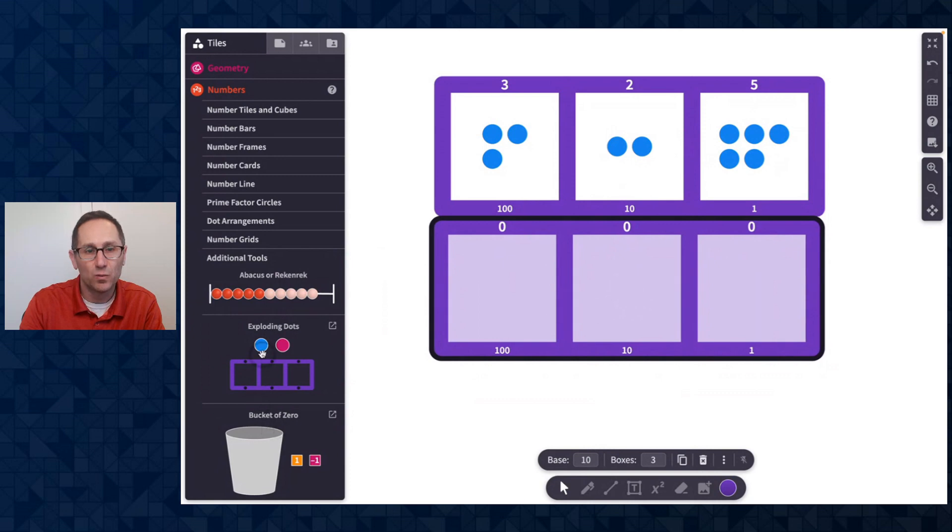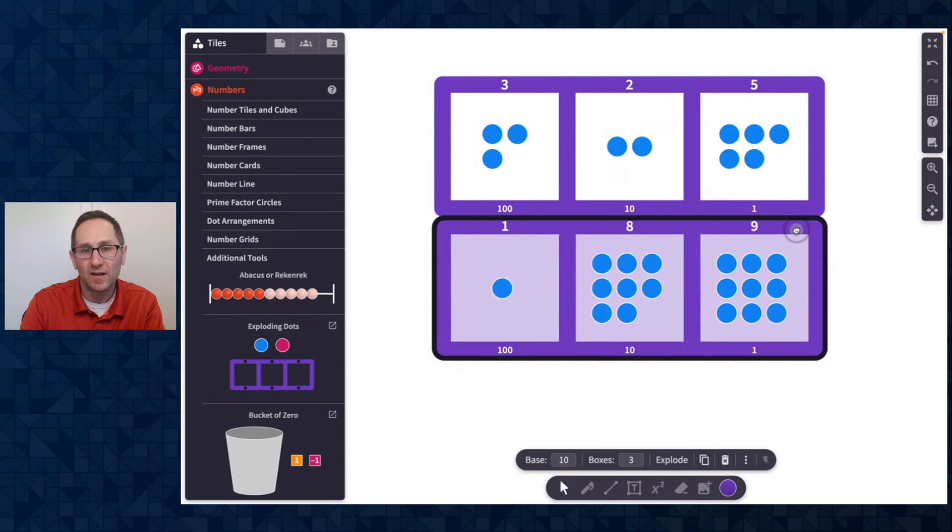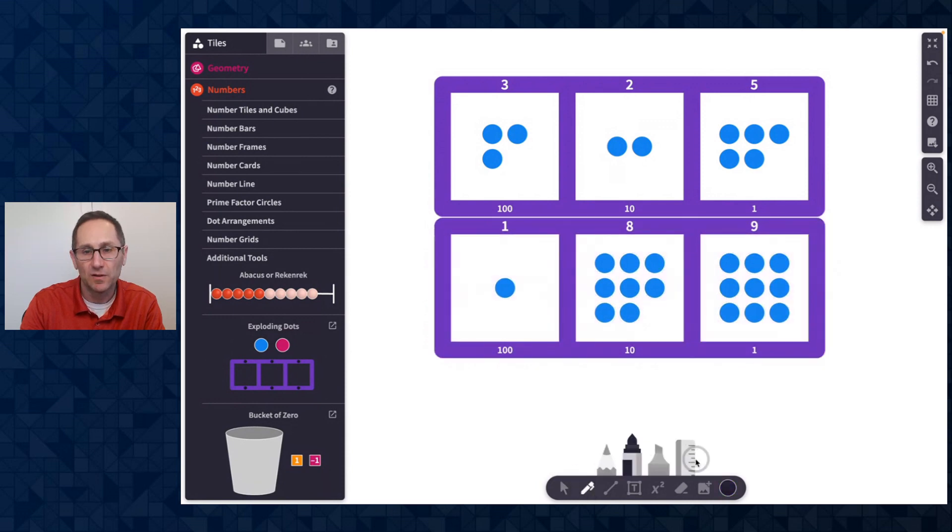And here I need 189. So 180, hitting the C button a bunch, 89. All right. So there's my question. Again, if I want to use the pen tool to show that I'm doing a subtraction problem here, I can do that.